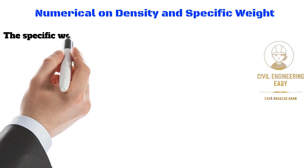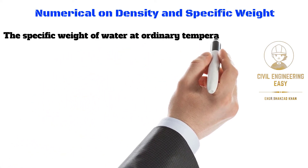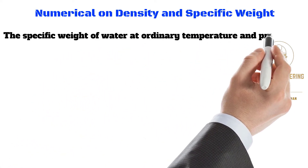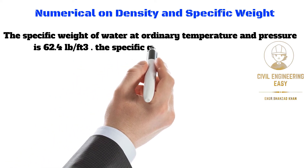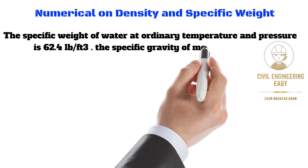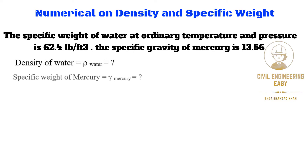It is given that the specific weight of water at ordinary temperature and pressure is 62.4 pounds per cubic feet. The specific gravity of mercury is 13.56. We are required to find out the density of water, specific weight of mercury, and the density of mercury. Let's solve the numerical.